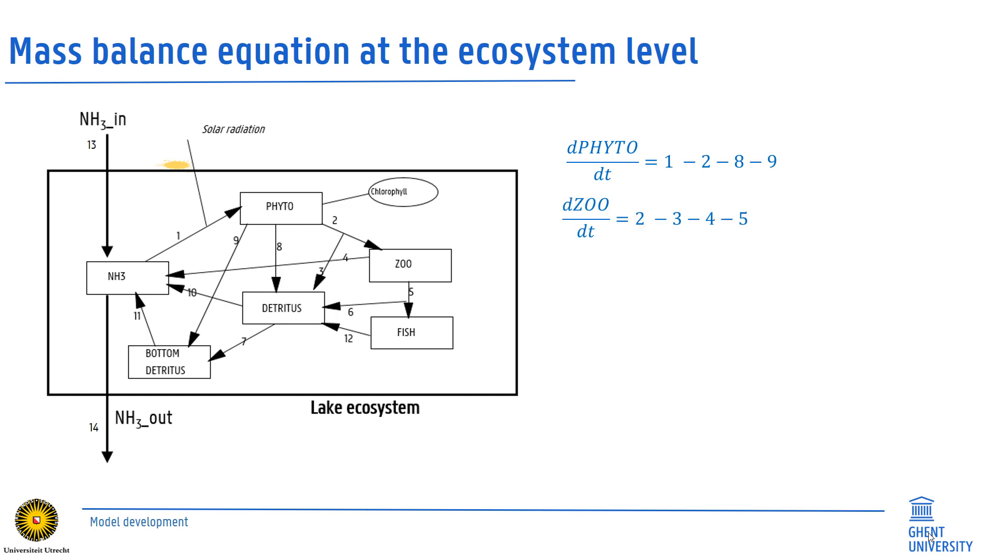Nitrogen balances in zooplankton result from import two minus export three, four and five. Those in fish result from import five minus six minus twelve. Nitrogen in free-floating detritus from influxes three plus eight plus six plus twelve minus the export flow seven and export flow ten.